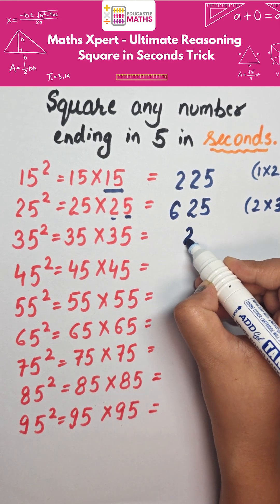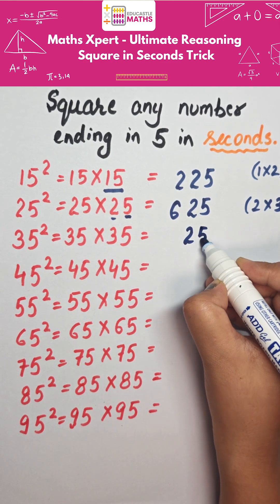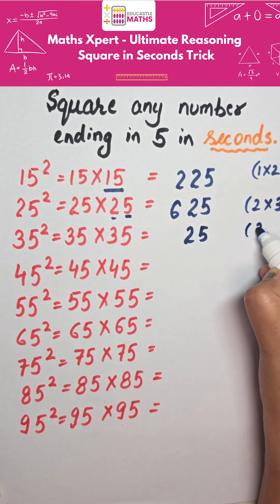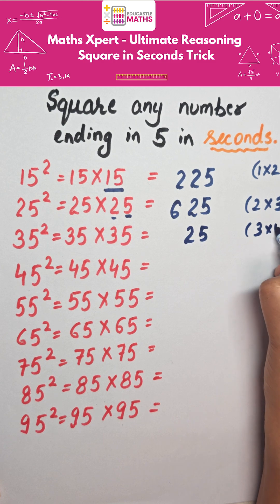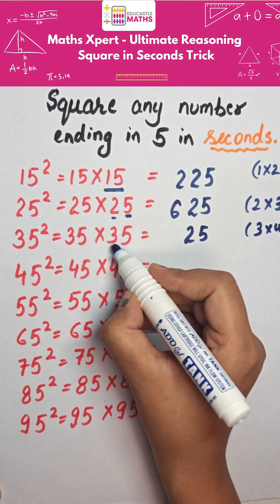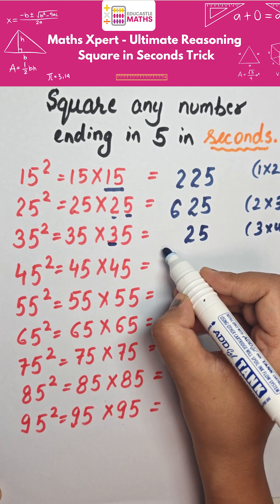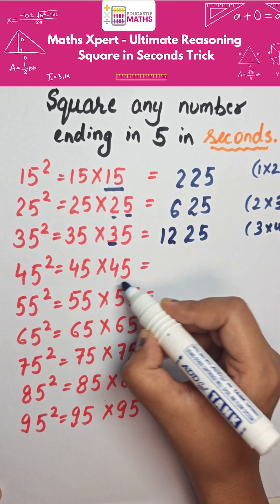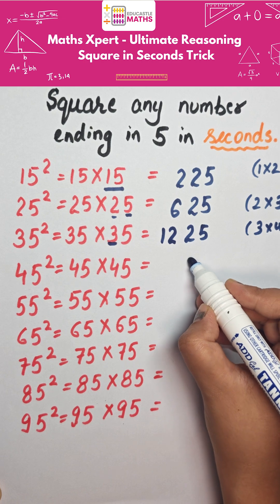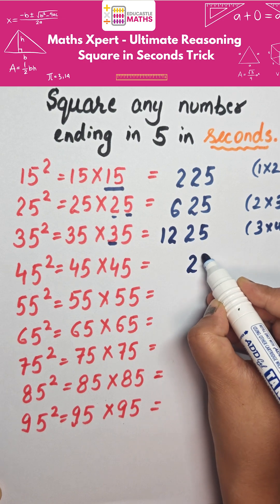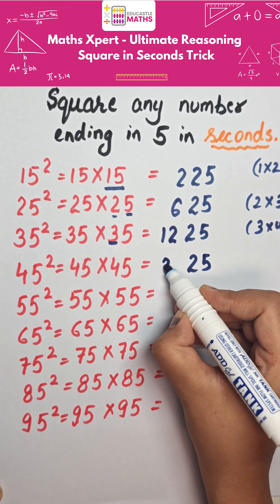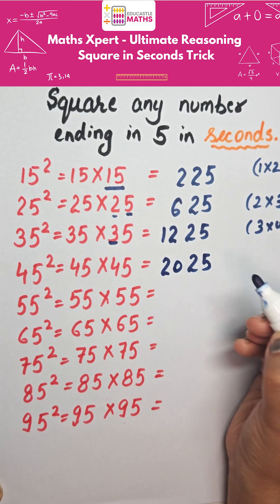Again, 5 times 5 makes 25. Then 3 multiplied by 4 will be 12, so this is 1225. Same way, 25 will come, then 4 times 5 makes 20, so the answer is 2025.